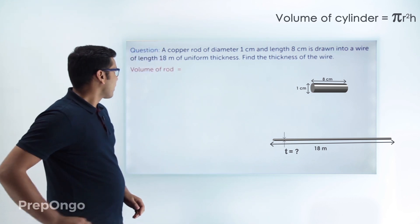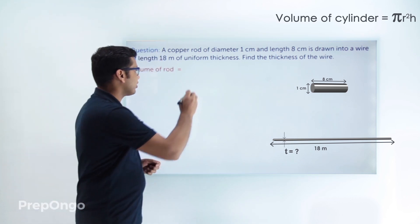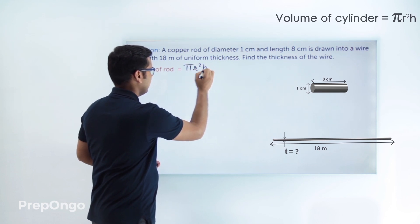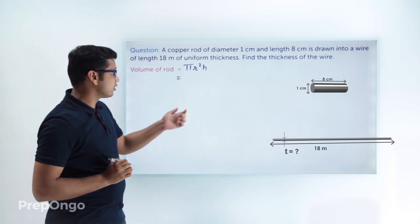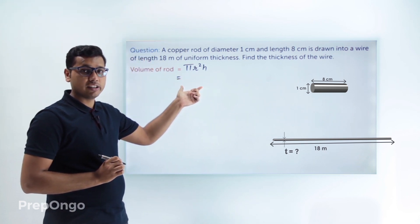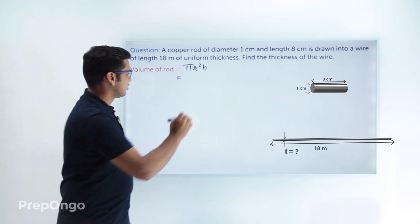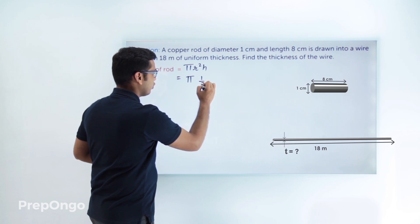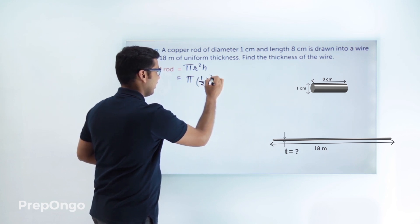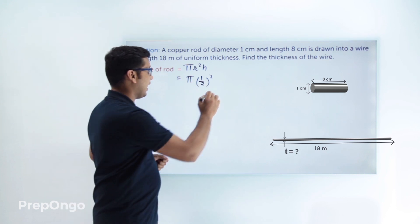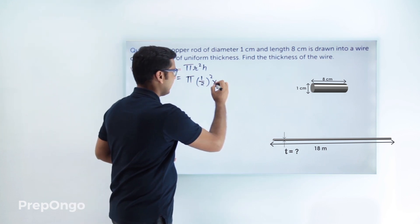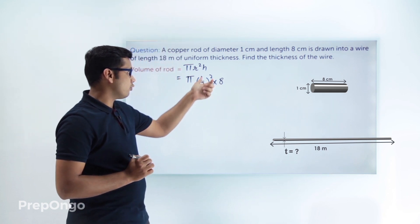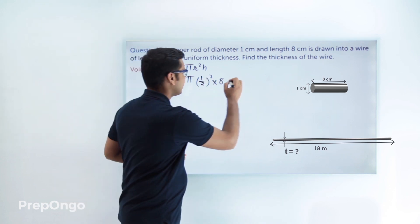The volume of the rod equals π r² h. Putting in the values: radius is 1/2 since the diameter is 1 centimeter, and height is 8 centimeters. So the volume of the rod is π × (1/2)² × 8 cubic centimeters.